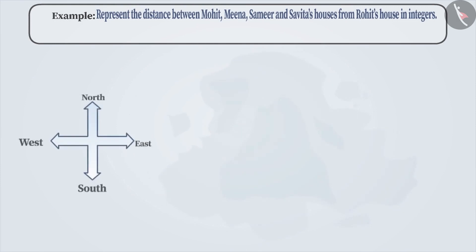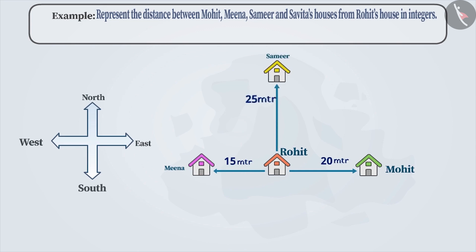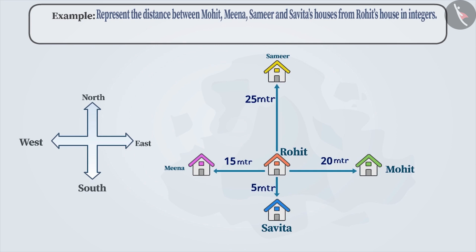The next example: Mohit's house is at a distance of 20 meters towards the east from Rohit's house. Meena's house is 15 meters towards the west. Samir's house is 25 meters towards the north. And Savita's house is 5 meters towards the south from Rohit's house. Represent the distances of Mohit, Meena, Samir, and Savita's houses from Rohit's house.